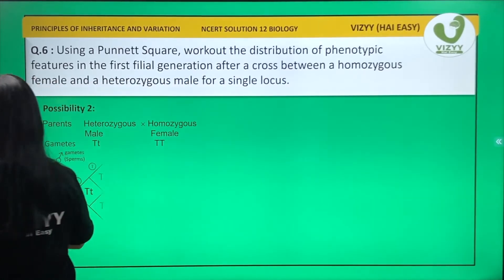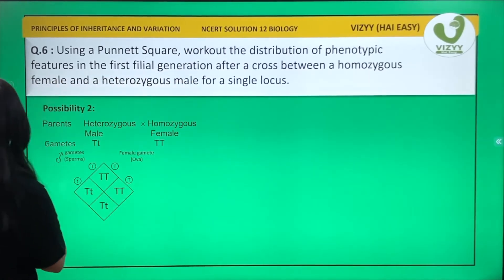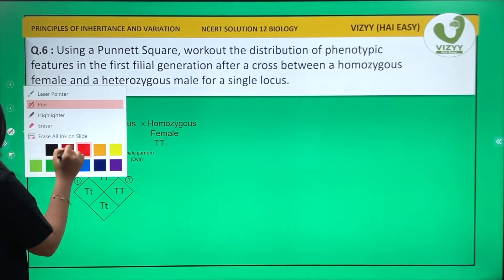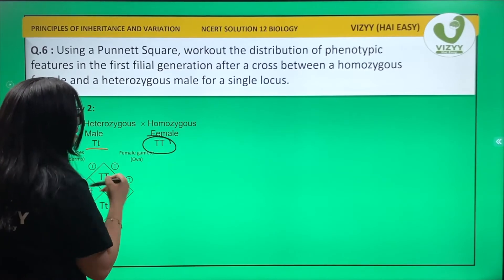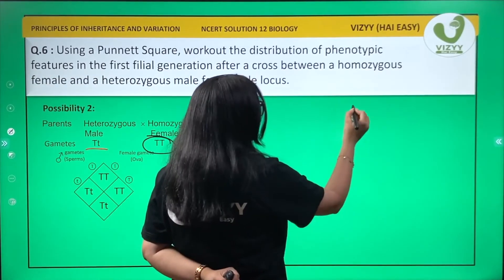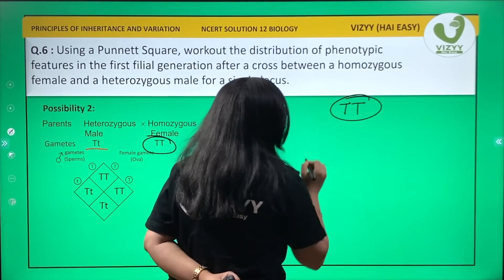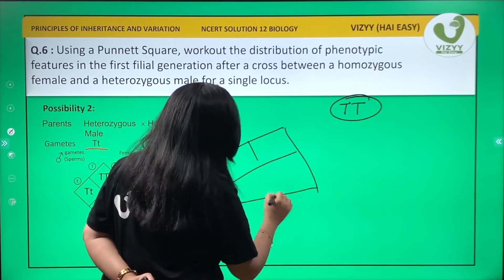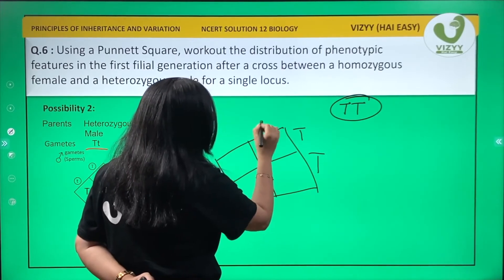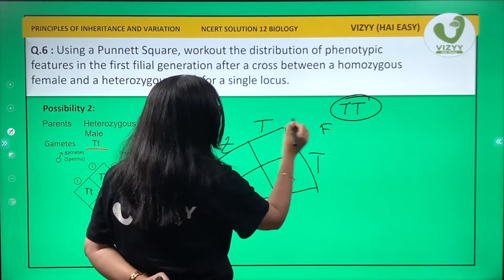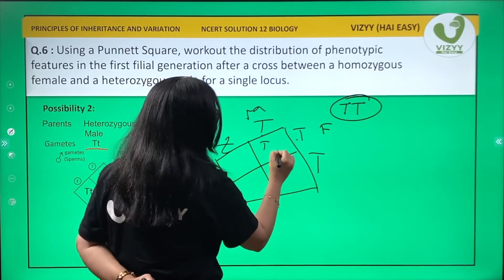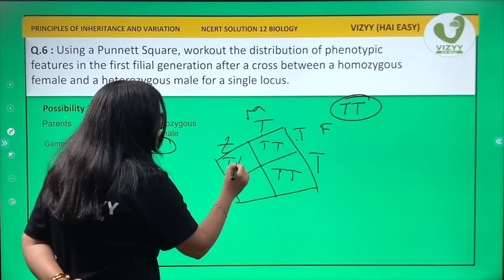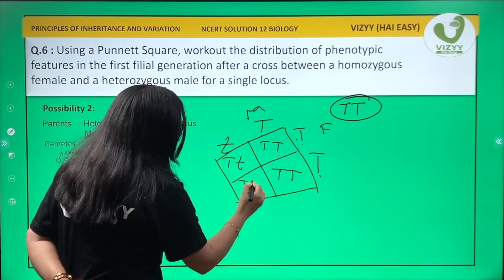Let's make a Punnett square. Gametes would be T and T - this is female and this is male. This gives homozygous tall, again homozygous tall. This and this give heterozygous tall, and again heterozygous tall. The ratio will change - they are all tall.